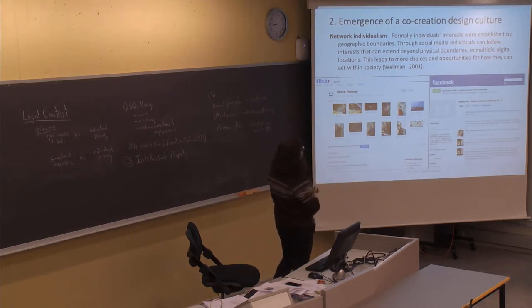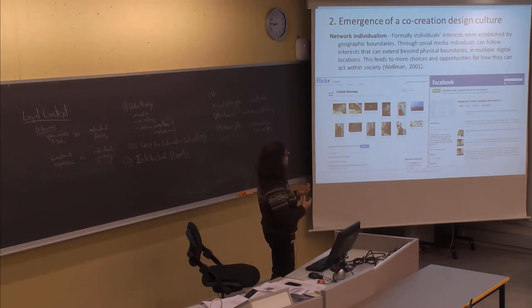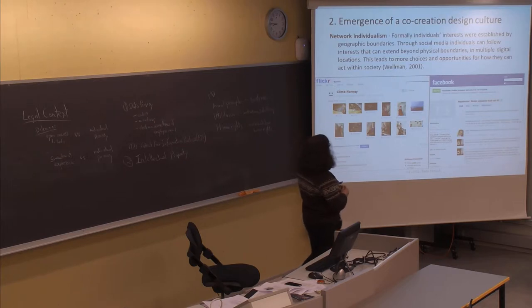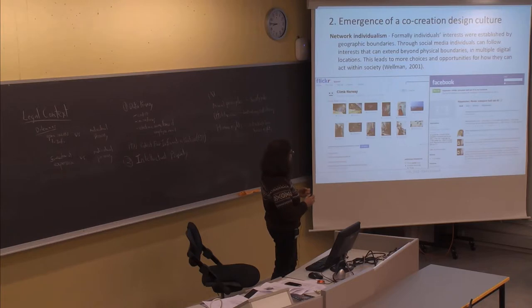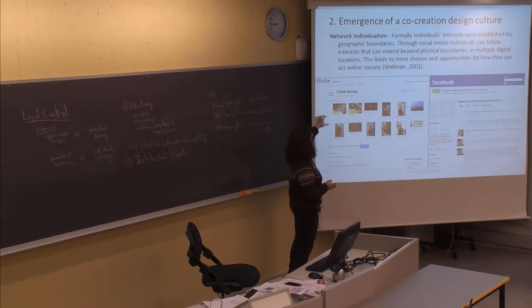Co-creation design emerged as a culture, and several factors led to this. The first is network individualism: before, individuals had to join clubs based on their geographic location, but now they can join groups anywhere, independent of physical boundaries. This gives people more choices and opportunities. For example, Flickr lets people share photos — a group called 'Climb Norway' has contributions from people in different locations.